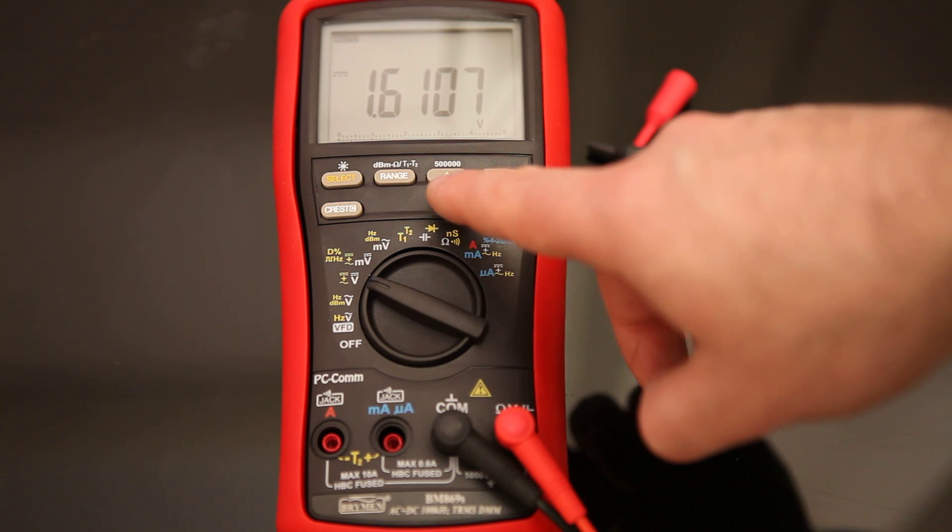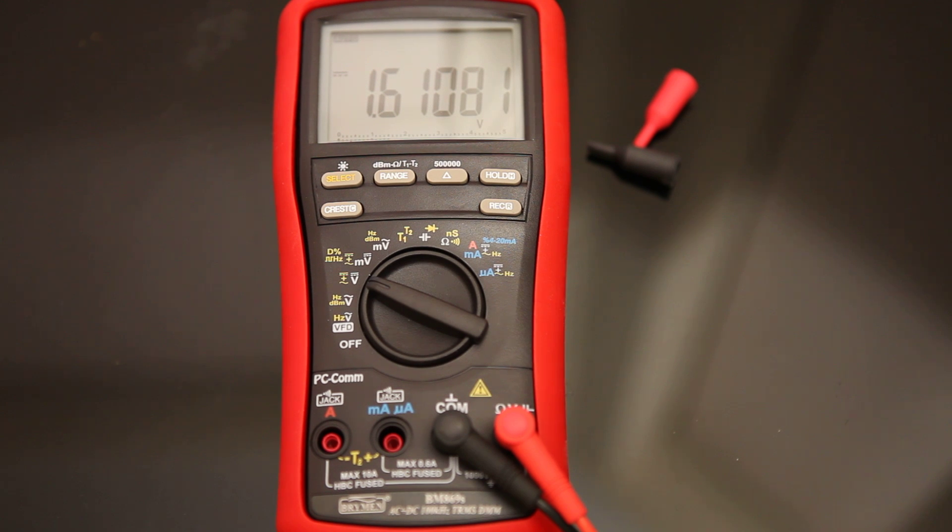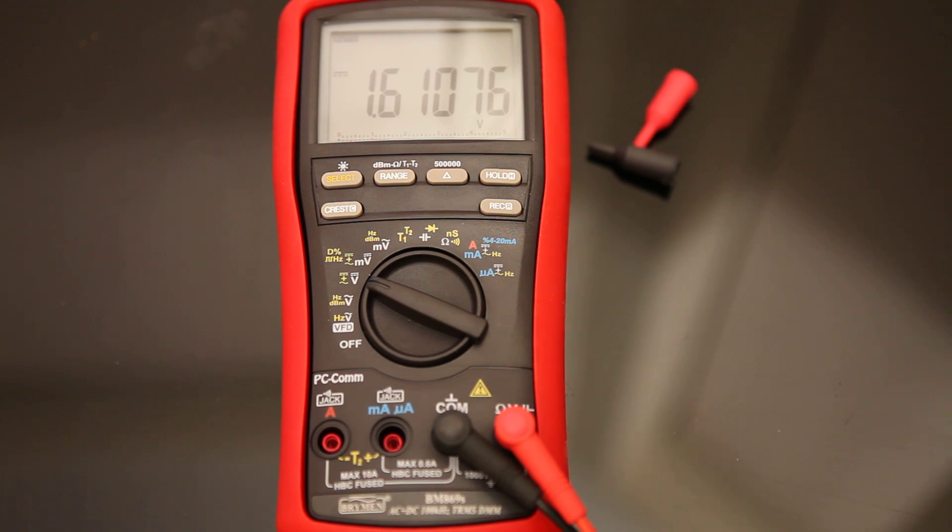But it's also got a 500,000 count mode, so I press this button, then we get an extra digit, which is quite cool. So that's not bad precision available there, but that's only available in DC volts, not AC volts.